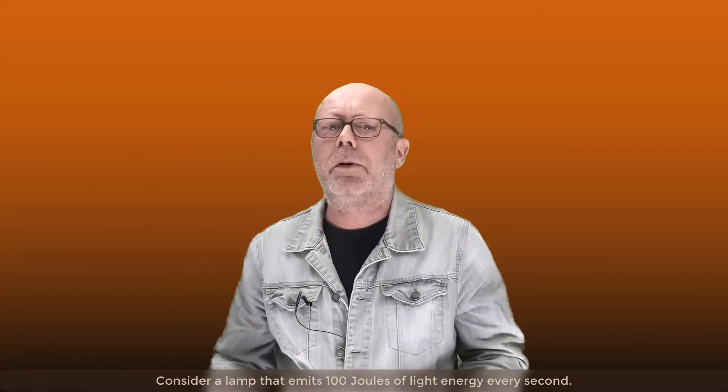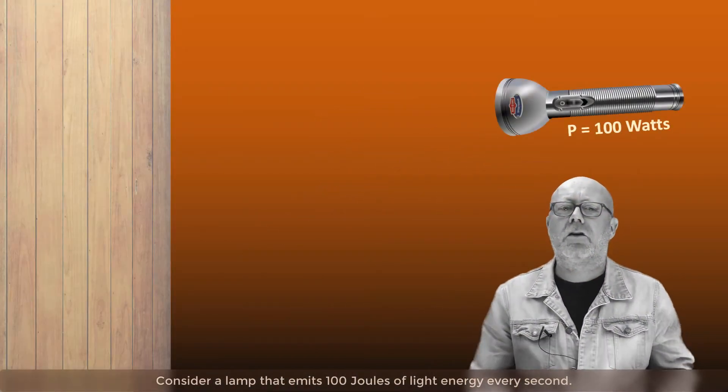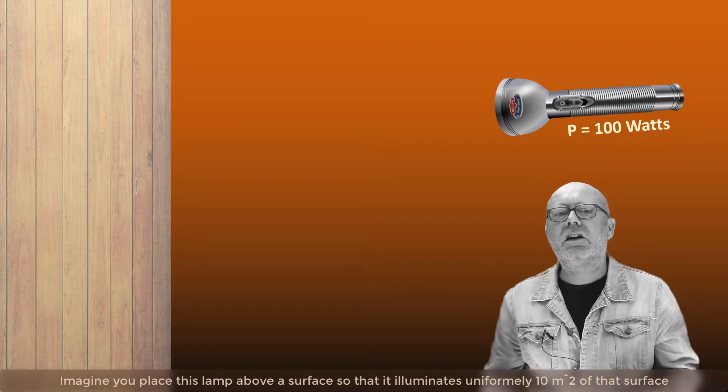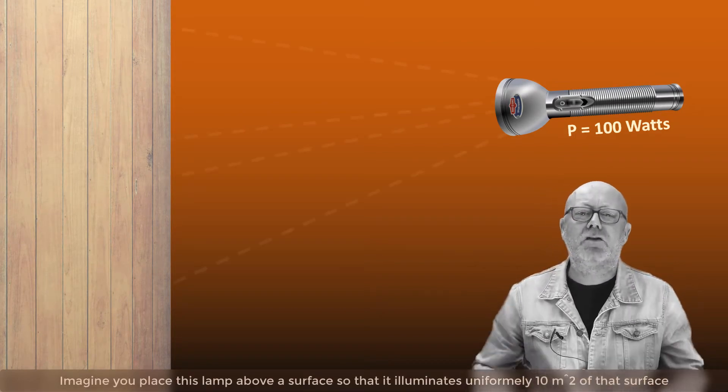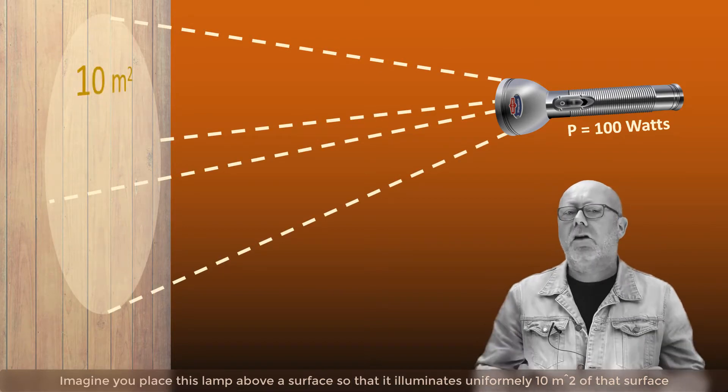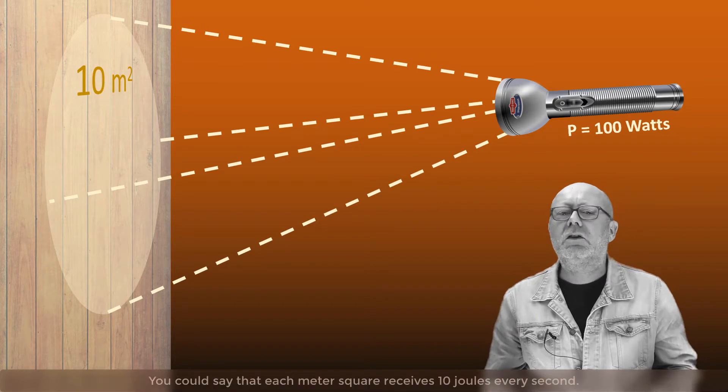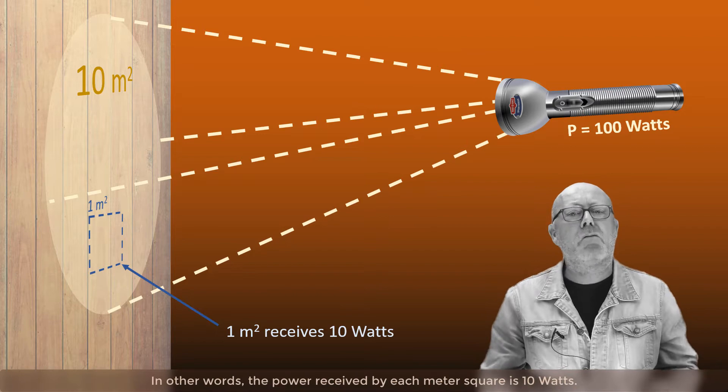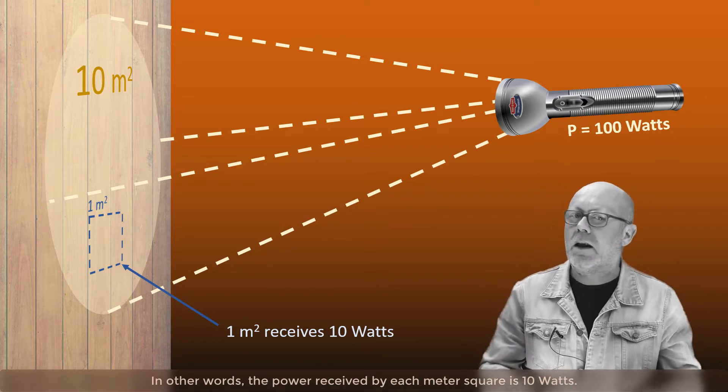Consider a lamp that emits 100 joules of light energy every second, that is a power of 100 watts. Now imagine that you place this lamp above a surface so that it illuminates uniformly 10 meter squares of that surface. You could say that each meter square receives 10 joules every second. In other words, that the power received by each meter square is 10 watts.